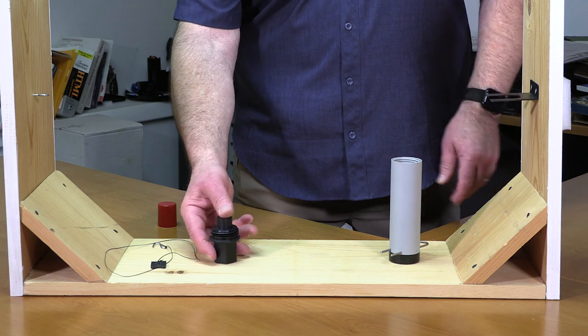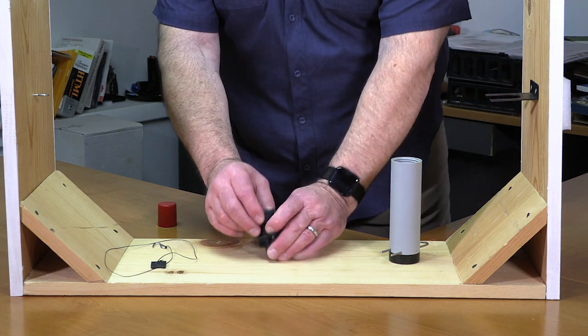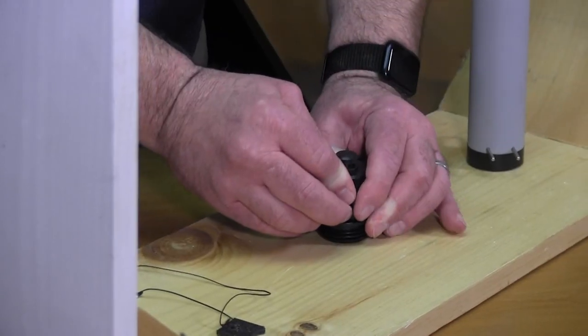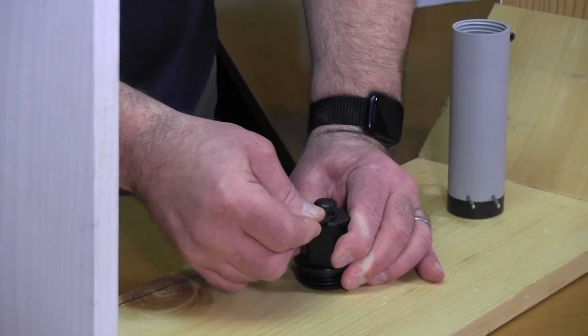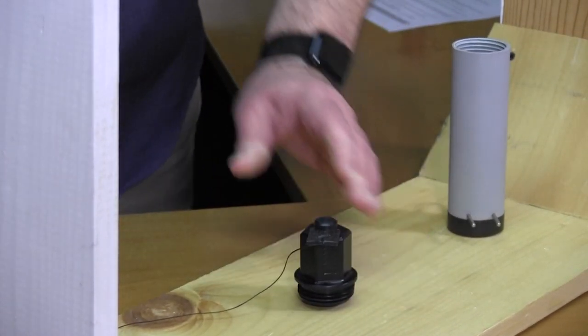Step three: you take your activator assembly, turn it over, press it down with one hand, and insert your sear into the sear slot, and it locks in position.